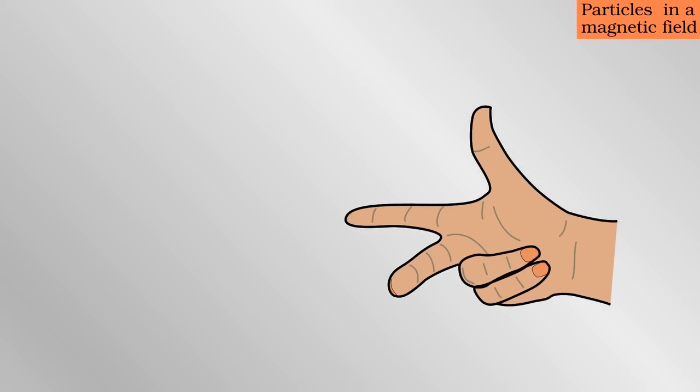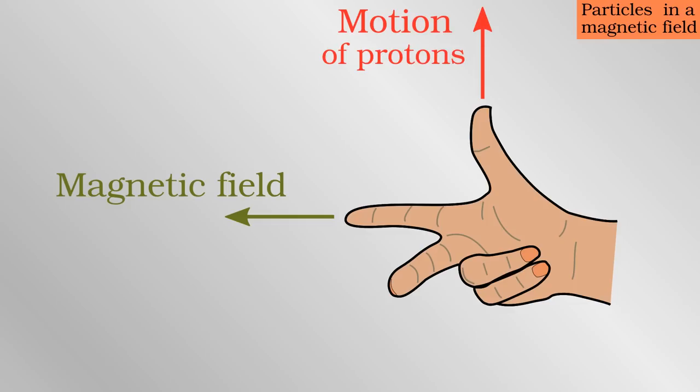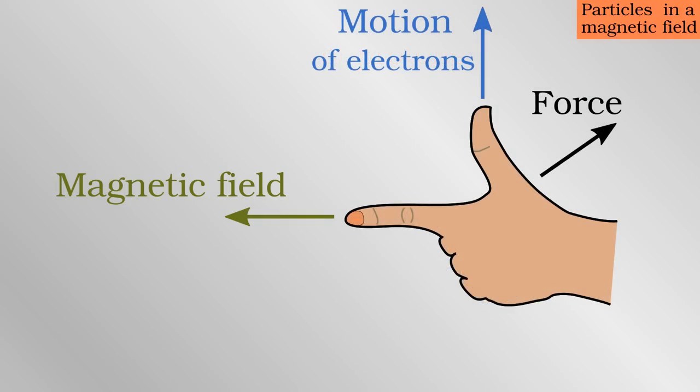You may also remember a version of the right hand rule. Keeping the fingers at right angles to each other, line up the index finger with the direction of the magnetic field, the thumb with the direction of motion of an ion, and the middle finger will show the direction of magnetic force. For a negatively charged electron, do the same thing with your left hand.